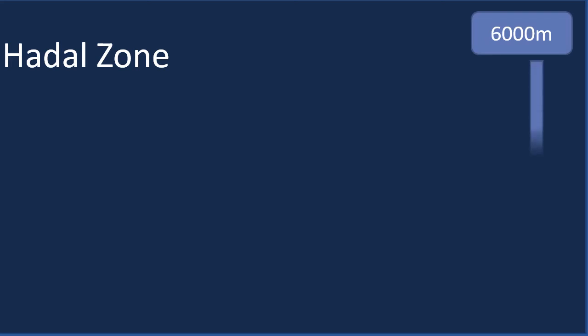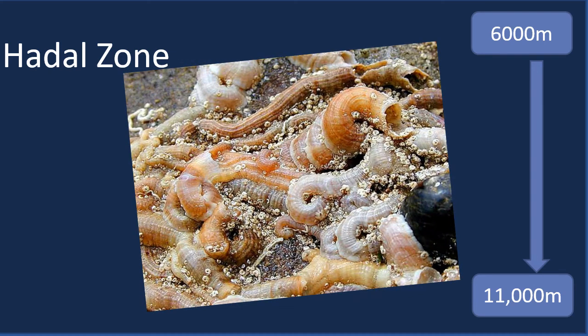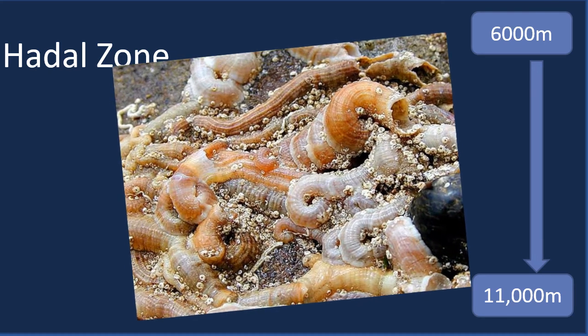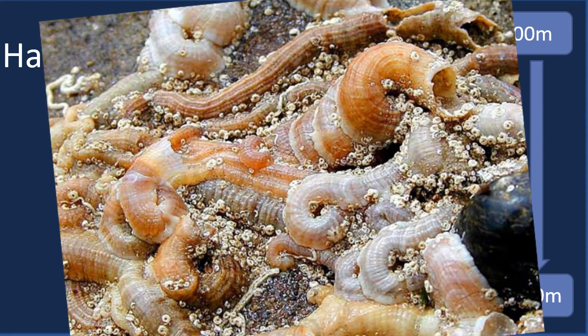Finally, the hadal zone, beginning at a depth of 6000 metres and going down to a depth of 11000 metres. One of the very few organisms able to live here include tube worms. These organisms have no mouth, stomach, or intestines, yet they have adapted to survive at the very bottom of the ocean.